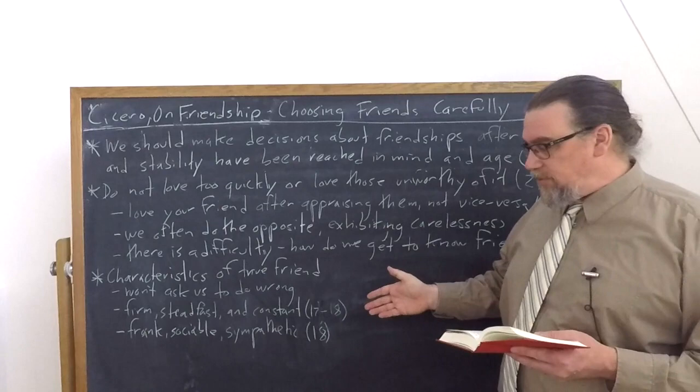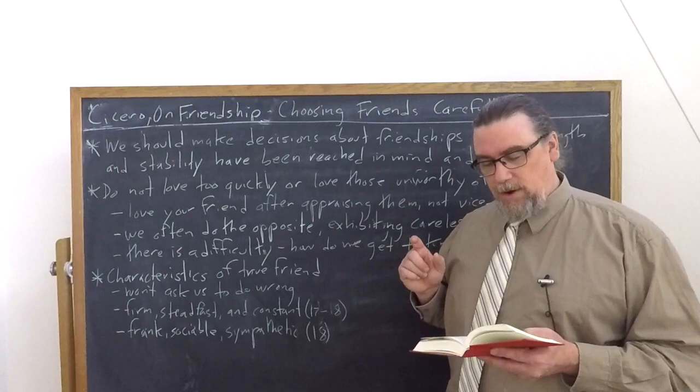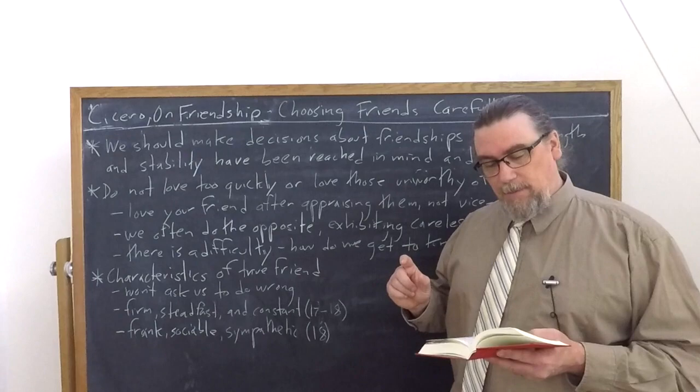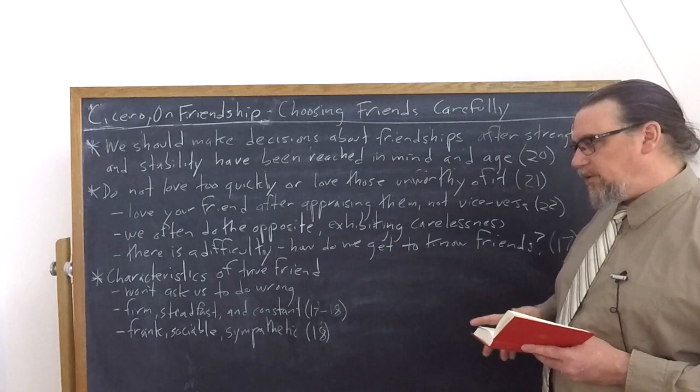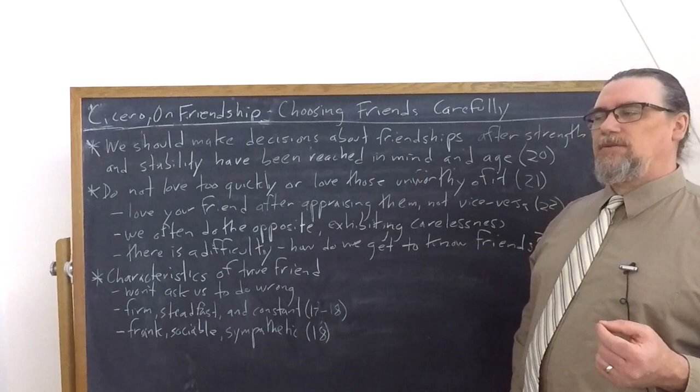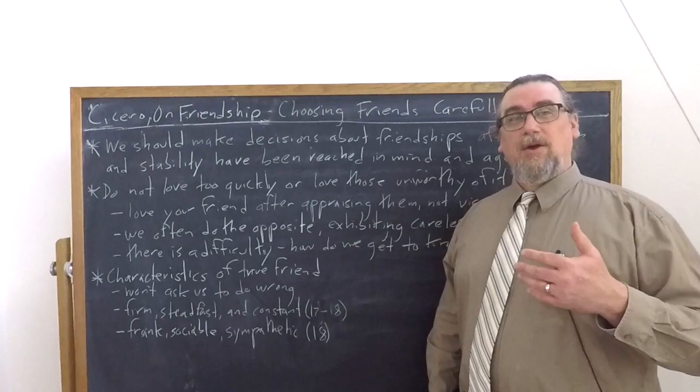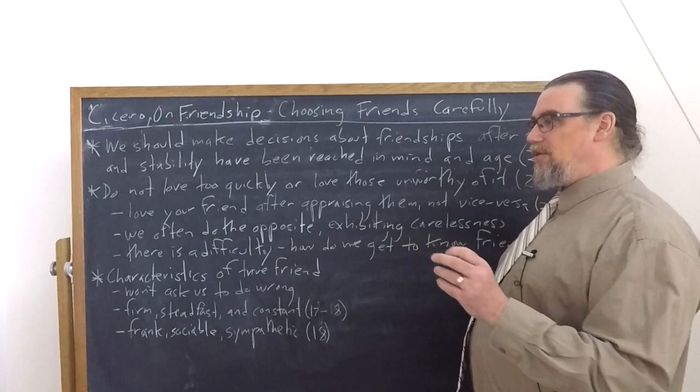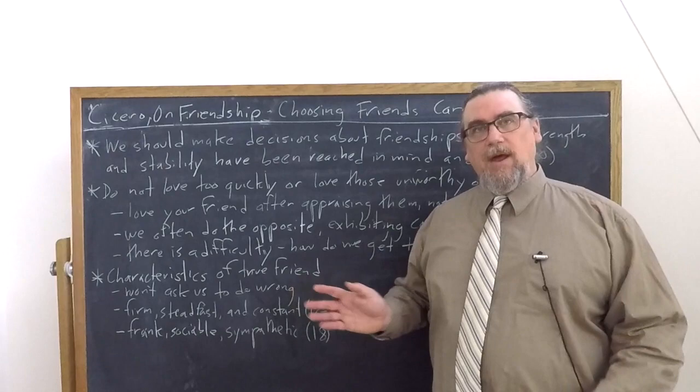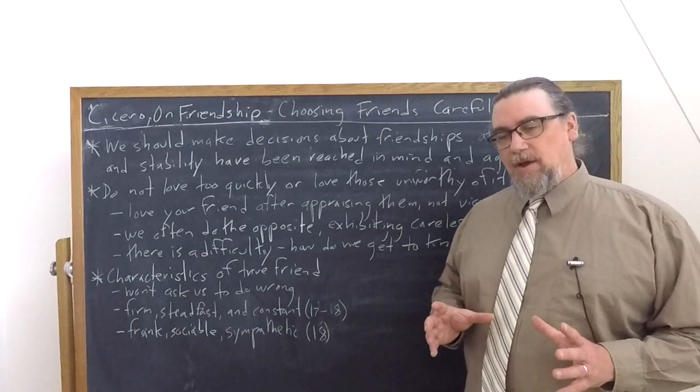He then also tells us in chapter 18 that the right course is to choose for a friend one who is frank, praetera, sociable, communem, and sympathetic, consentianem. So what does being frank and sociable and sympathetic mean? It means that they reach out to us. They are connected with us. They'll also tell us when we're screwing up. They're not going to hide things from us. They're going to be sincere. We might say, or in the Latin, honestum, honestus in this case, because we're talking about these friends. And that means sort of a straight shooter, as we say. So these are characteristics that we want in a friend. How do we find out whether they actually have them? We do have to put them to the test.